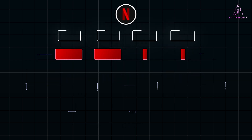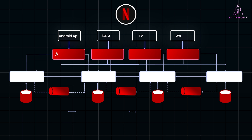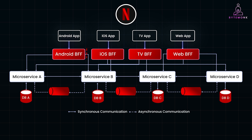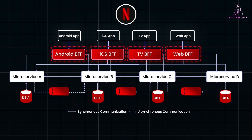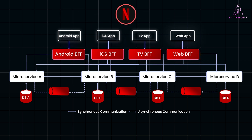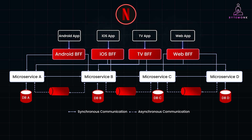At Netflix, instead of having one general-purpose backend API that serves all clients, they use a separate backend for each type of client — be it Android, iOS, TV, or web. This means each platform has its own dedicated backend service specifically designed to meet its unique needs. This approach allows Netflix to optimize the performance, user experience, and development process for each platform independently. Each client communicates with its own dedicated backend service, and for example, the Android team at Netflix is not just responsible for the Android app — they also maintain the backend that app communicates with, finely tuned to handle Android-specific requirements.